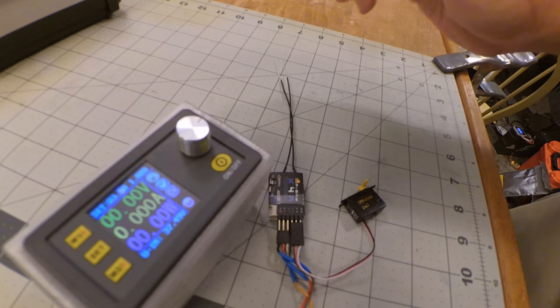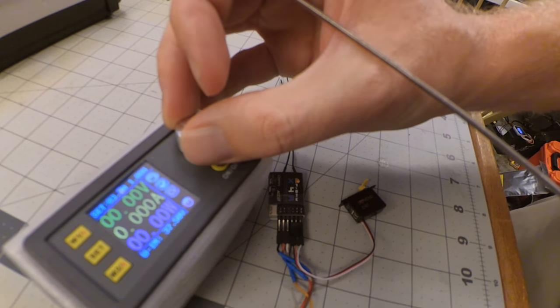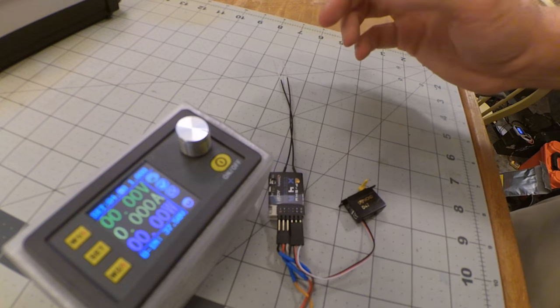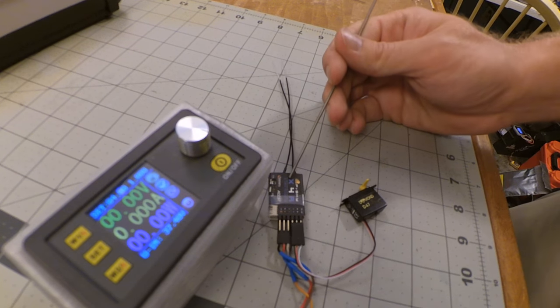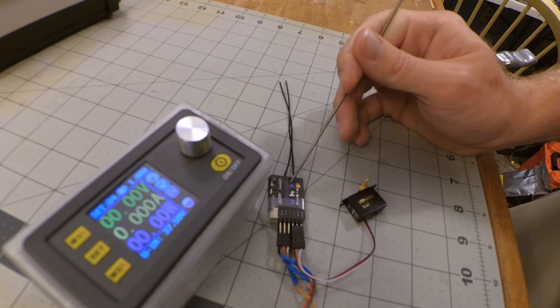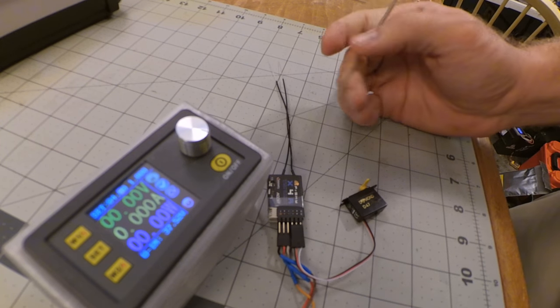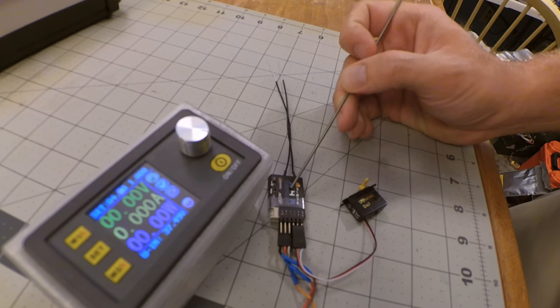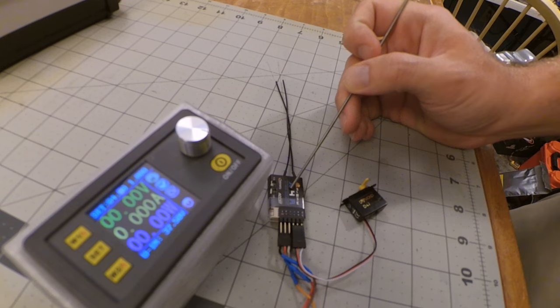It's currently set to 3.5 volts. I'm going to go ahead and turn that up a little bit, start at four volts, and we know that's the package rated low voltage cutoff. So let's go ahead and drop that below and see how low it'll go.